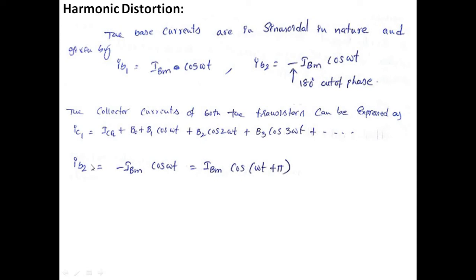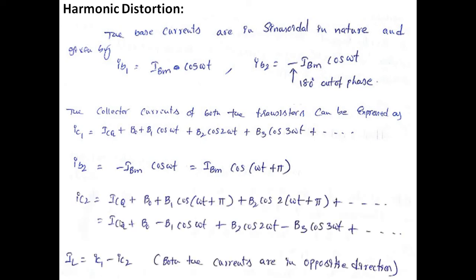Since IB2 = -IBM·cos(ωt), we rewrite this as IBM·cos(ωt + π). Substituting into the collector current expression, IC2 = ICQ + B0 + B1·cos(ωt + π) + B2·cos2(ωt + π) + ... Expanding this gives IC2 = ICQ + B0 + B2·cos(2ωt) - B3·cos(3ωt) and so on.